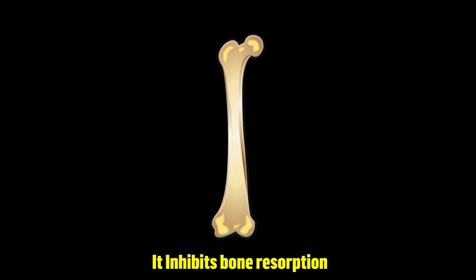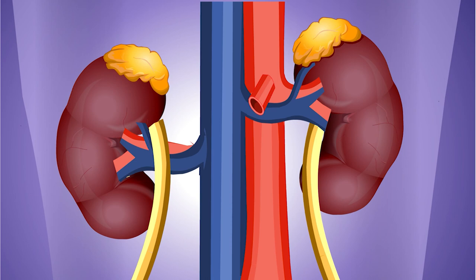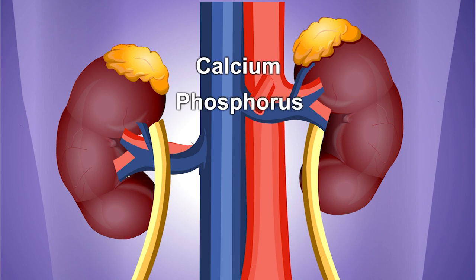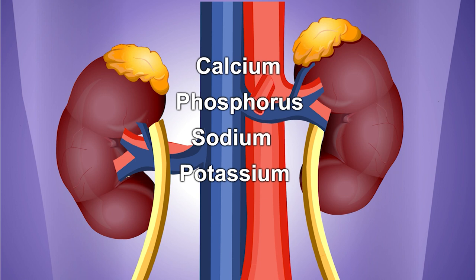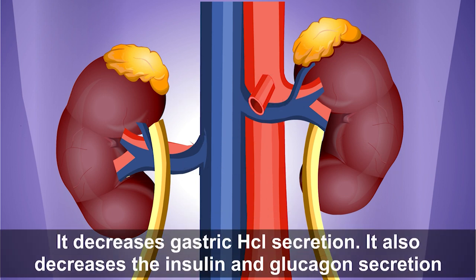Calcitonin inhibits bone resorption. In the kidney, calcitonin inhibits the reabsorption of calcium, phosphorus, sodium, potassium, magnesium, and other ions. Calcitonin also decreases gastric hydrochloric acid secretion, as well as insulin and glucagon secretion.